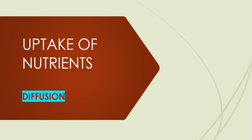Hi everyone, now we are going to discuss uptake of nutrients in bacterial cells. Before going into the topic, let's know about what nutrients are. Nutrients are substances or chemicals required as raw materials for microorganisms for their metabolism and reproduction. Examples include carbon, nitrogen, phosphorus, and so on.